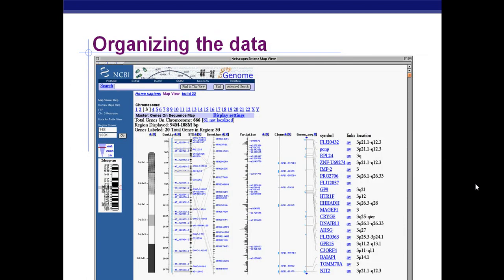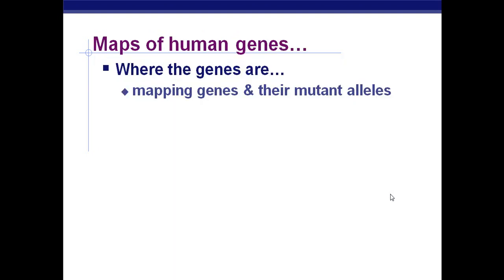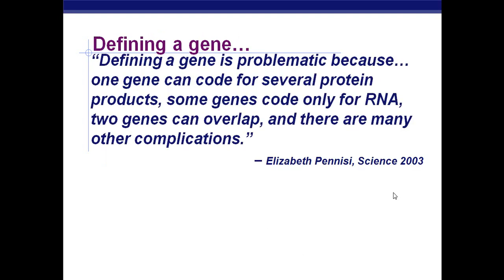Then that data gets organized. You can choose by chromosome — you can see here the species, your scientific name, which chromosome you want to look at, and what settings you have. You can go gene by gene and learn quite a bit. All this is available to anybody. But what about mapping those genes? Where are the genes? Remember that they can have mutant alleles. Defining a gene is not so easy.